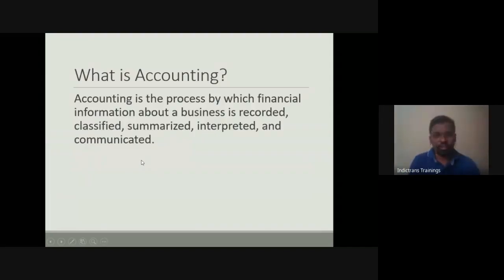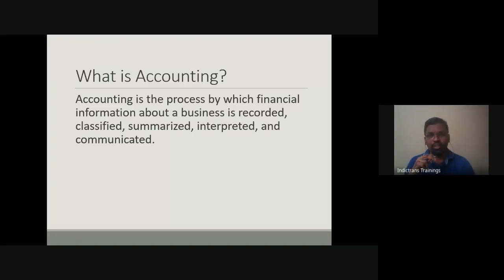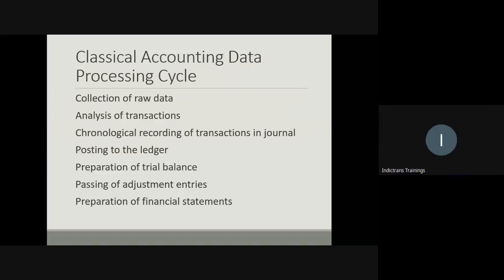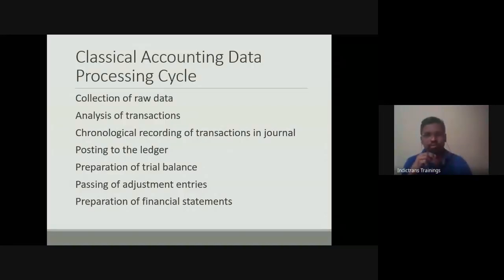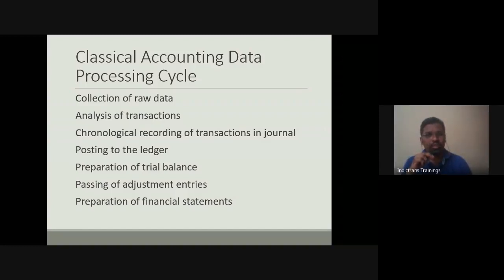Accounting is a process by which financial information about a business is recorded, classified, summarized, interpreted, and communicated. In the accounting data cycle, you first collect raw data, then analyze those transactions to understand how the raw data should be recorded, and then you record those transactions in what is called a journal.